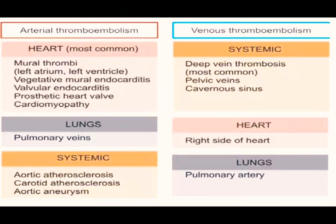Arterial thromboembolism in the heart includes mural thrombi in the left atrium and left ventricle, vegetative and mural endocarditis, prosthetic heart valves, and cardiomyopathy. In the lungs, pulmonary veins may be involved. Systemic sources include aortic atherosclerosis, carotid atherosclerosis, and aortic aneurysm. In venous thromboembolism, deep vein thrombosis is most common, occurring in pelvic veins, cavernous sinus, and the right side of the heart, leading to emboli in the pulmonary artery.